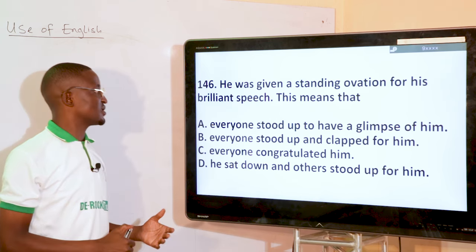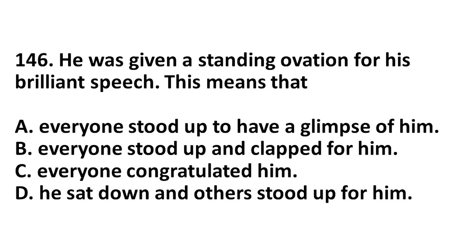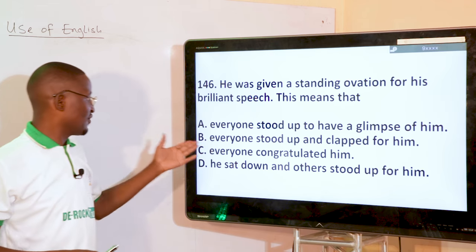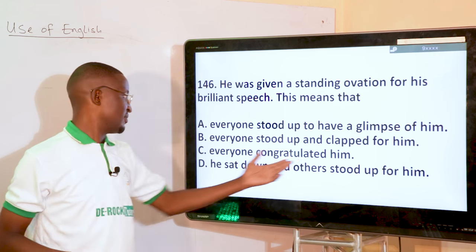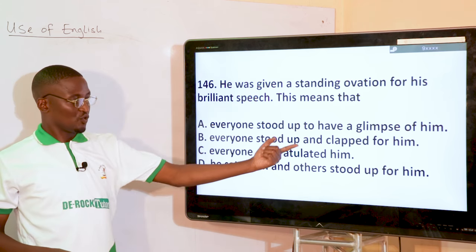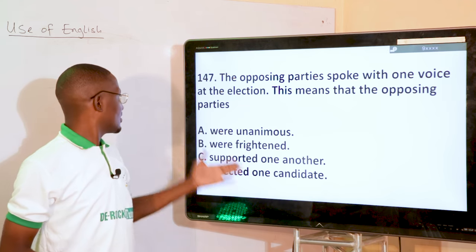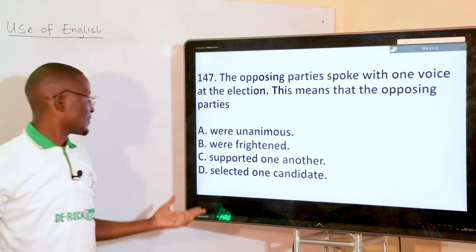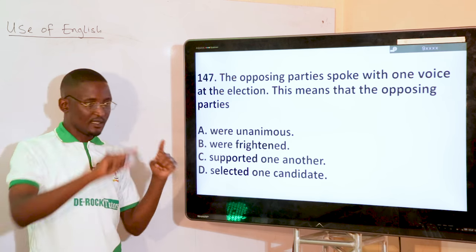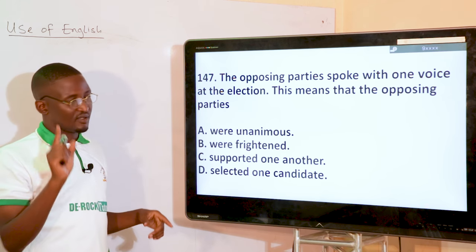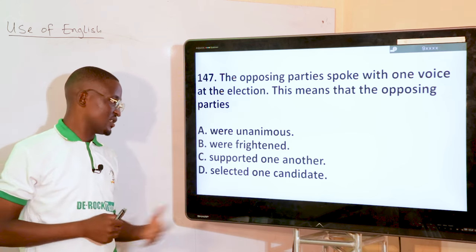He was given a standing ovation for his brilliant speech. What does it mean to be given a standing ovation? Everyone stood up and clapped for him — option B. The opposing parties spoke with one voice at the election. To speak with one voice means the parties were unanimous — they were in one accord, unanimous in the decision.